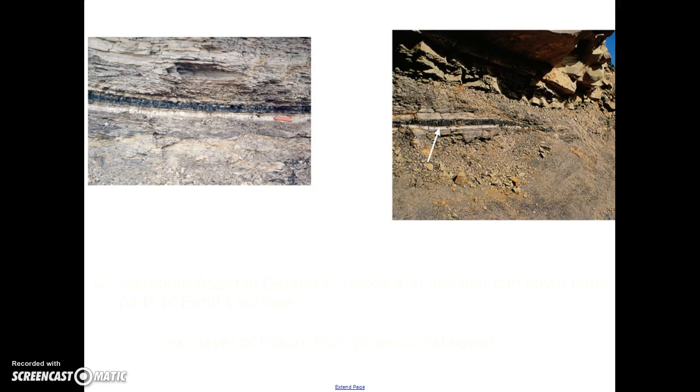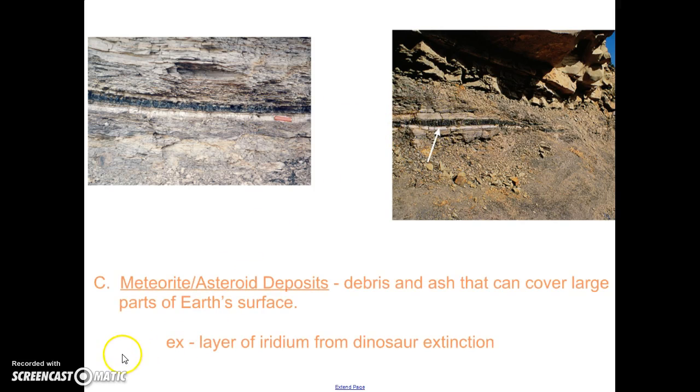A third technique that we use, very similar to the ash. You'll notice that in both of these pictures there is a white layer followed by a much darker layer on top. That white layer came from the meteor that caused the dinosaurs to become extinct. When meteors or asteroids hit the Earth, the debris that's broken up, just like ash, will cover large parts of the Earth's surface. These white layers are the layer of iridium that was discovered all over the Earth, and it is the same age as when the dinosaurs went extinct, 65 million years ago. So looking at meteorite or asteroid deposits can help us to correlate or match layers.